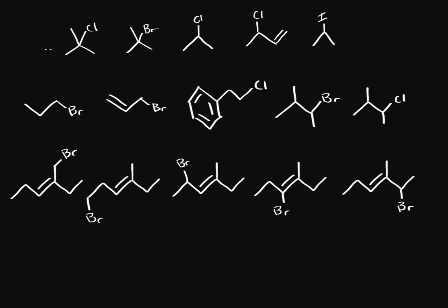We're going to look at three different examples and rank them separately. In this first example, we have a chlorine on a tertiary carbon. If this chlorine leaves, we get a tertiary cation. If this bromine leaves, we also get a tertiary cation. And over here, chlorine would give us a secondary cation.